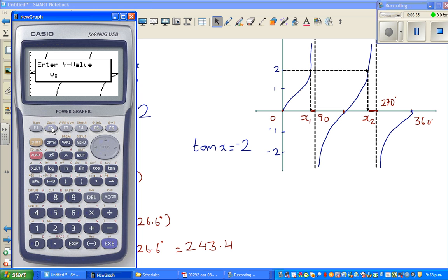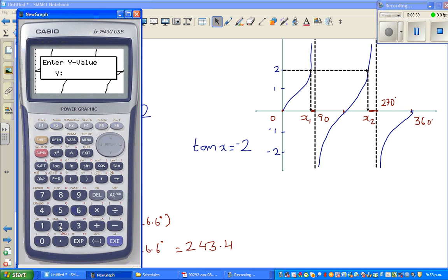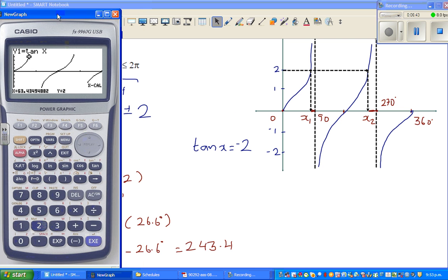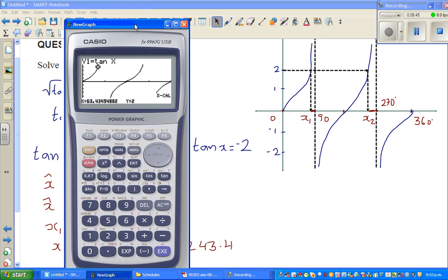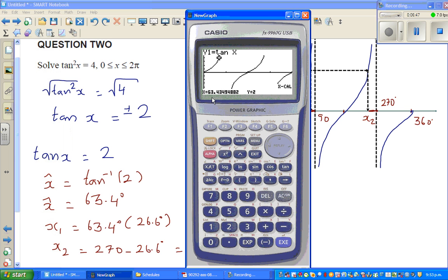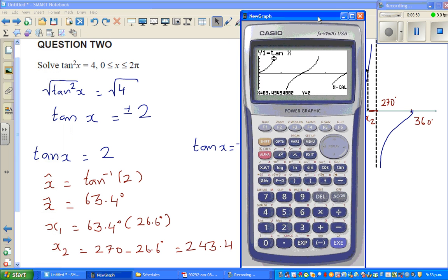So g-solve, x-calc. If you put y is 2, 63.4 degrees is that right? Yeah, so one answer is 63.4 degrees, and the other answer would be 243.4 degrees.